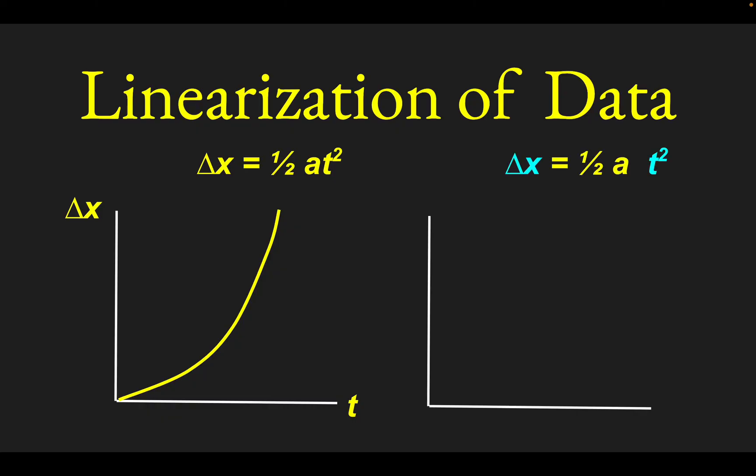since delta x is proportional to t squared, go ahead and rearrange it, and plot on your y-axis, put delta x, the distance it fell. And on the x-axis, put t squared instead of t.